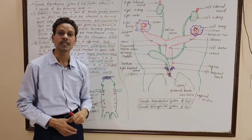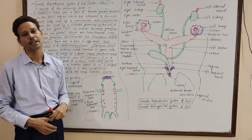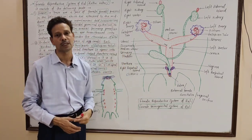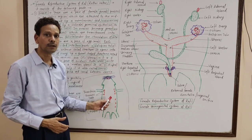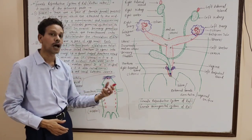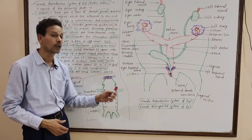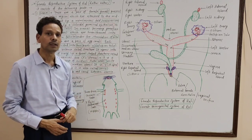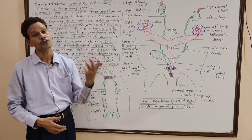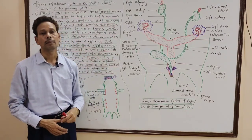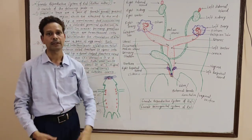In the female reproductive system, six pairs of mammary glands are present, which appear in the form of small outgrowths named nipples or teats. Out of these, three pairs are on the thoracic region — thoracic mammary glands — and three pairs on the abdominal region — abdominal mammary glands. These glands become fully functional during pregnancy. This is all about the female reproductive system of Rattus. Thank you.